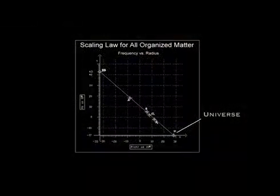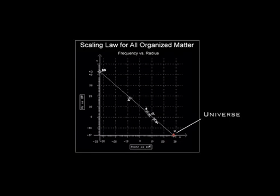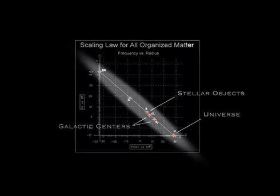The universe, with its black hole condition, was the first data point Haramain charted. He next added galactic centers and stars. They lined up in a linear progression with the universe — an amazing result.